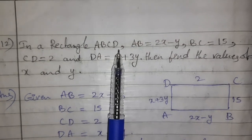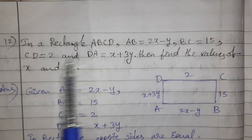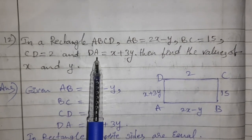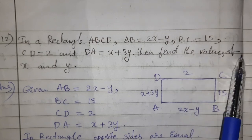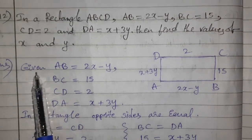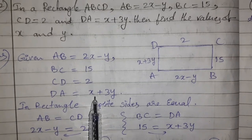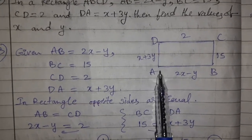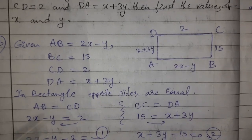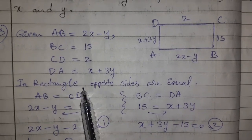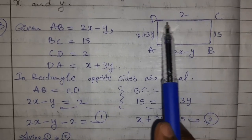Twelfth question: in rectangle ABCD, AB = 2x − y, BC = 15, CD = x + 2, DA = x + 3y. Find x and y. In a rectangle, opposite sides are equal, so AB = CD and BC = DA.